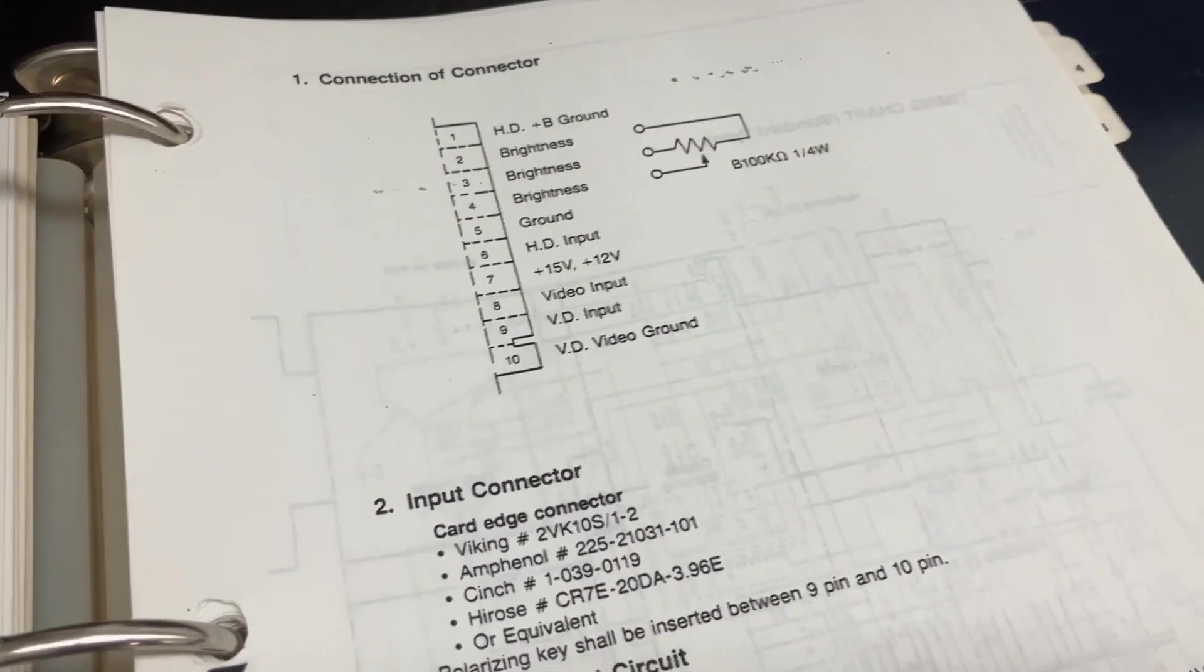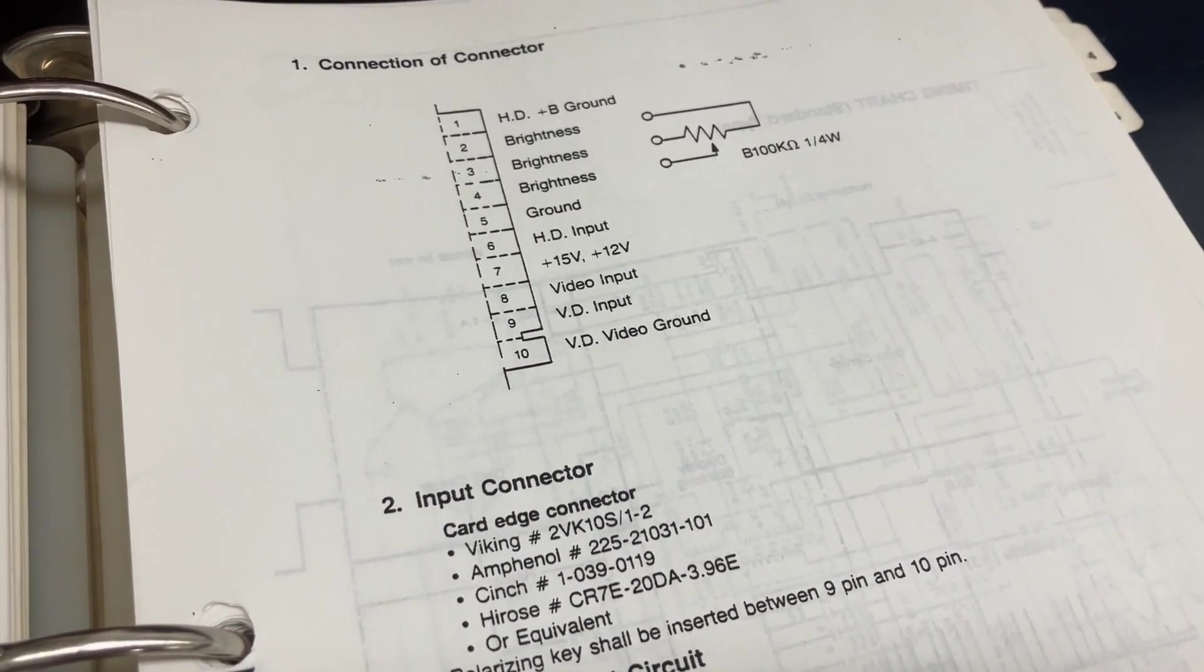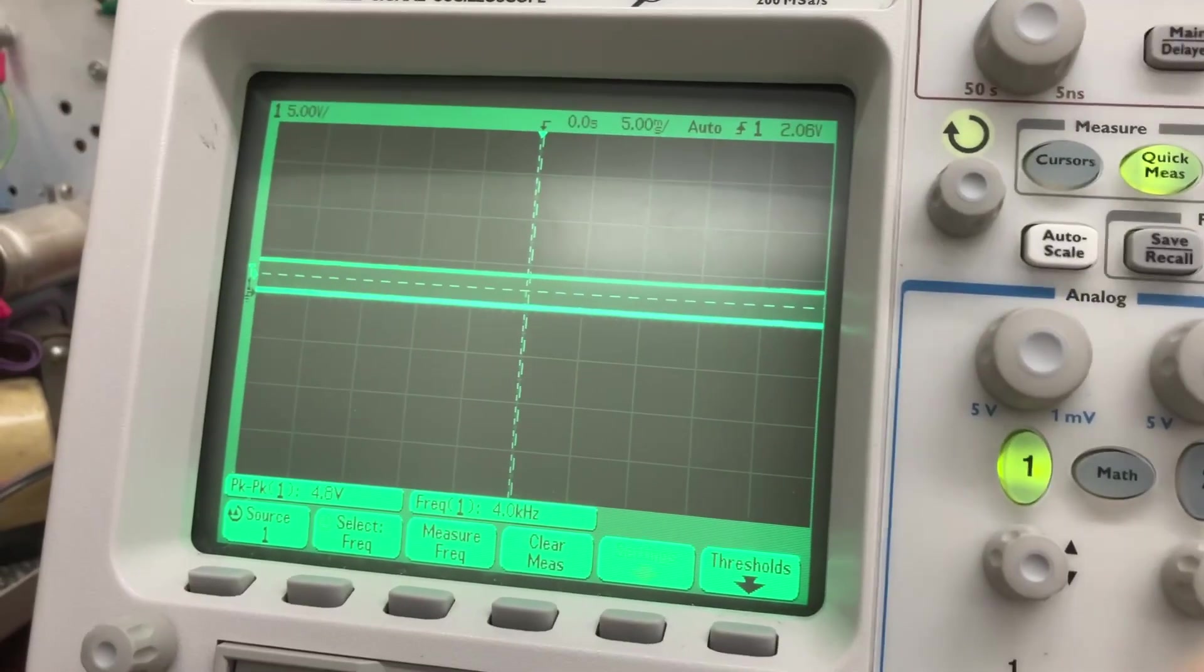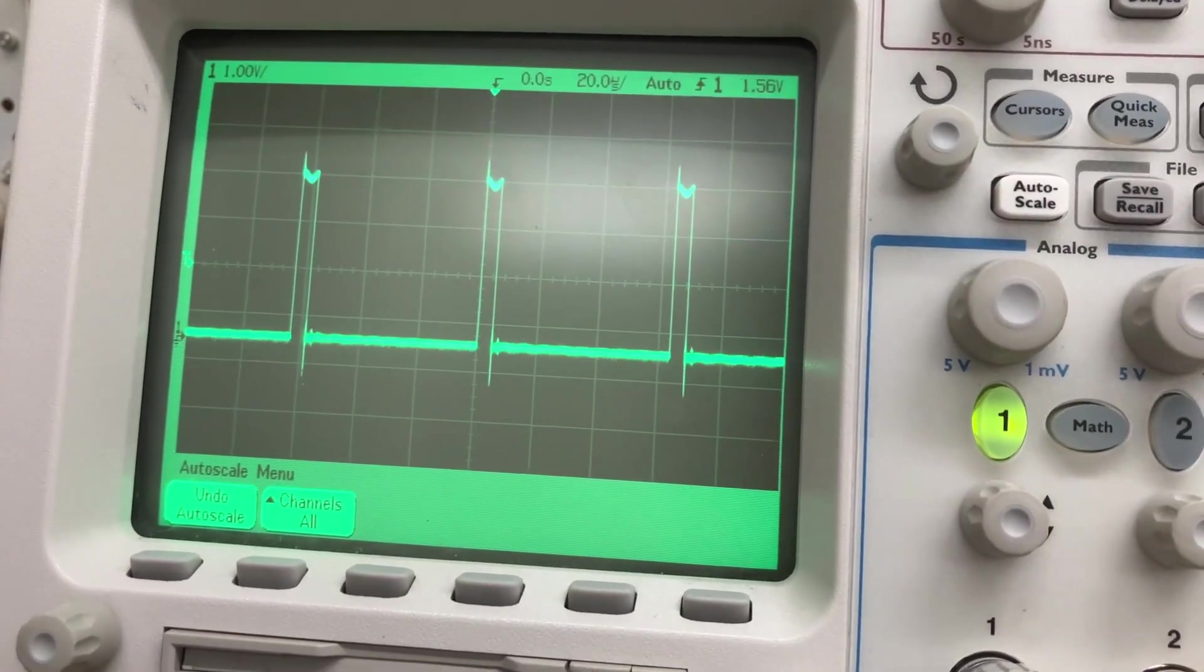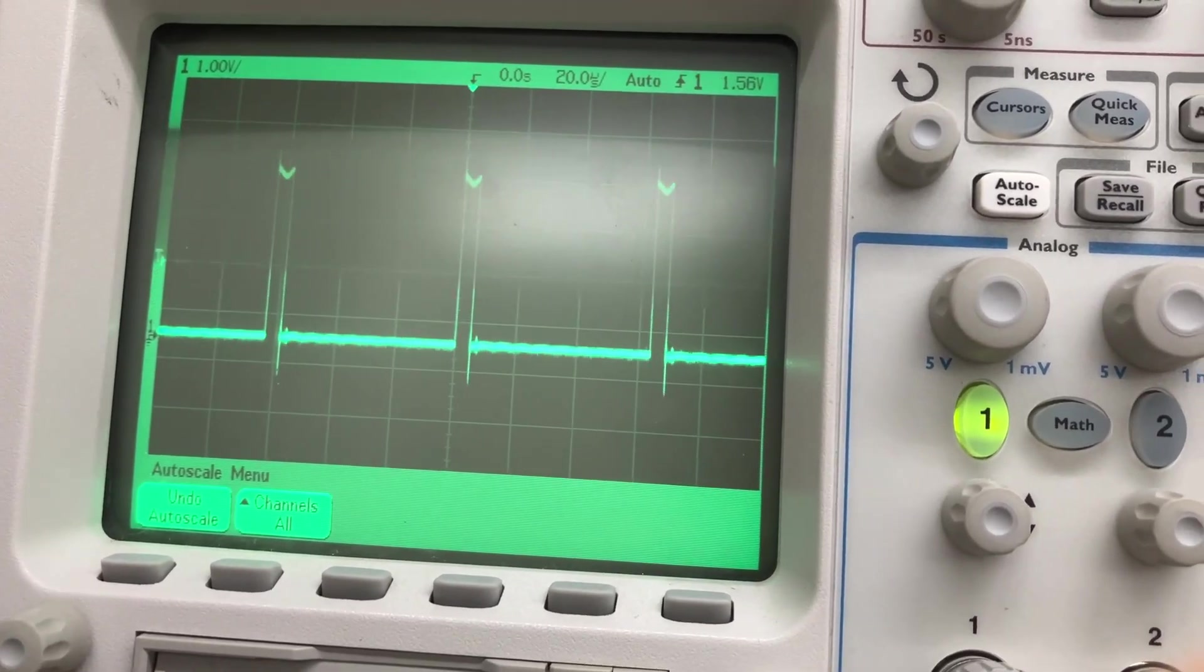And the next thing I'm going to measure, I'm going to measure three down from that which should be the horizontal input. Auto scale. Let's see what do we see there. If we hit quick measurement, 15.72.